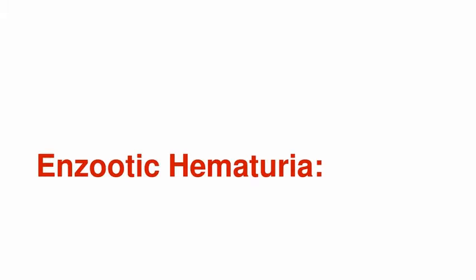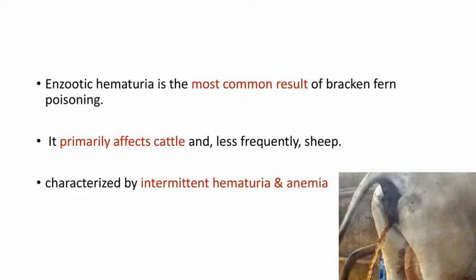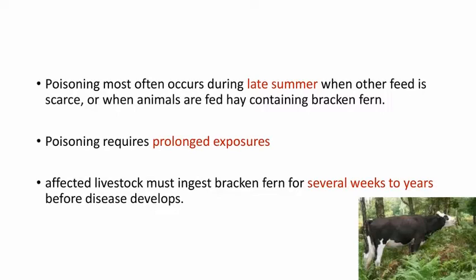The first one is Enzootic Hematuria. It is very important in cattle. Enzootic Hematuria is the most common result of Bracken Fern Poisoning. It primarily affects cattle and less frequently affects sheep. It is characterized by intermittent hematuria and anemia. In this picture you can see a cattle with hematuria — the discoloration of urine is clearly seen. Poisoning most often occurs during late summer because at that time other feed is scarce, or when animals are fed hay containing Bracken Fern. Poisoning requires prolonged exposure; affected livestock must ingest Bracken Fern for several weeks to years for the disease to develop.